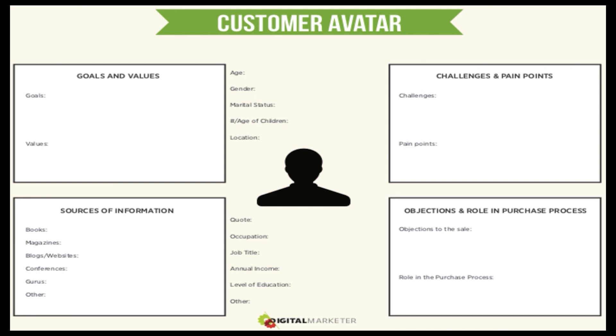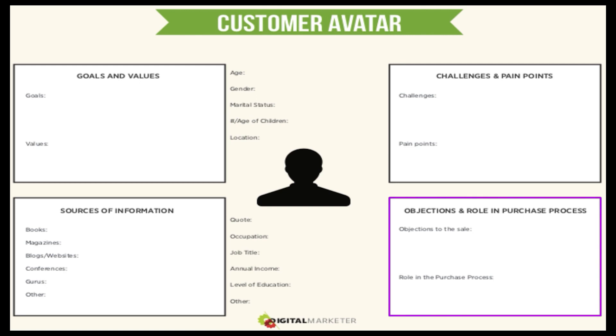Next are objections and role in the purchase process. Everybody has an excuse for why they can't do something, so let's address that excuse upfront. Understand what that objection might be and put things in place to address it before they ever even say it. Role in the purchase process is also important — are they the purchaser, or are they a parent purchasing for a child? We want to know who we're speaking to.